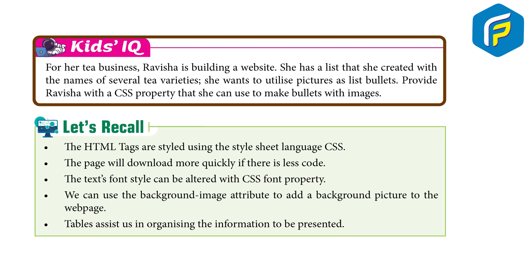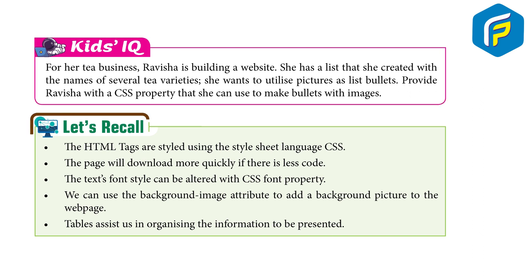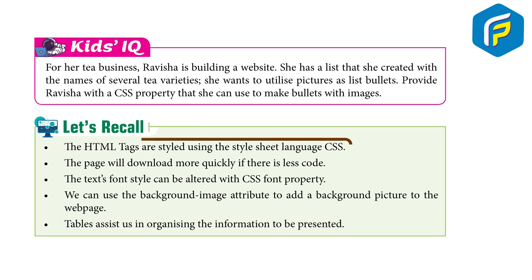Activity: Ravisha is building a website for her tea business. She has a list created with the names of several tea varieties and wants to utilize pictures as list bullets. Provide Ravisha with the CSS property she can use to make bullets with images. Let's recall: the HTML tag is styled using the style sheet language CSS.